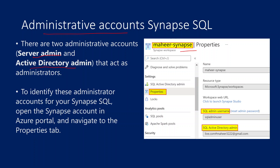When you go to Azure Synapse Workspace and navigate to Properties, that is where you can see two things. One is SQL Admin User, another one is SQL Active Directory Admin. The SQL Admin User is the user ID which will use SQL Authentication. And if you want to change the password, you need to use the Reset Admin Password option. The ID with which you created your Synapse Workspace will be added automatically as an Active Directory Admin.